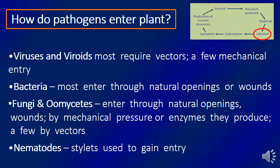Each pathogen differs in the way it enters the plant. Viruses and viroids require vectors or wounds on the plant surface to enter plant tissue. Bacteria enter through natural openings or wounds. Fungi enter through natural openings, wounds, mechanical pressure, or enzymes, and sometimes need vectors. Nematodes use the stylet to gain entry into plant roots.